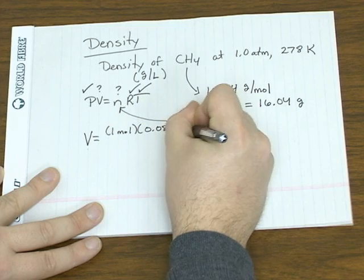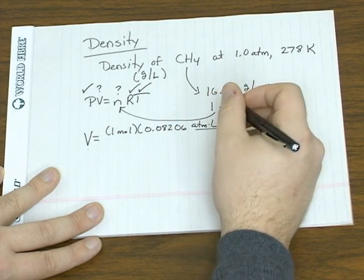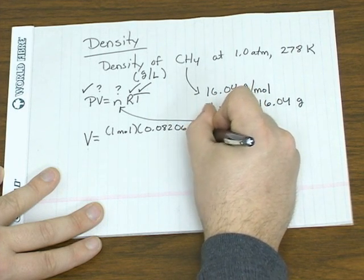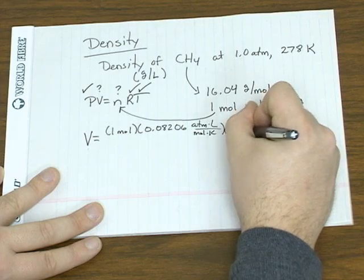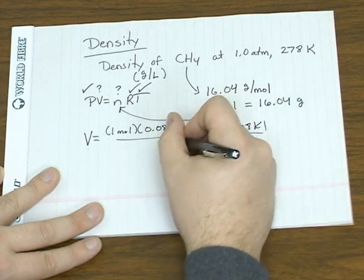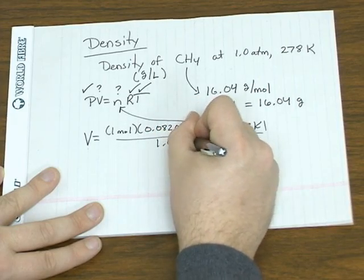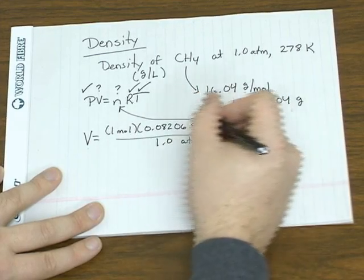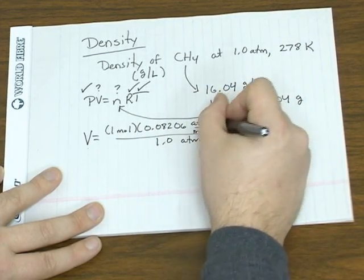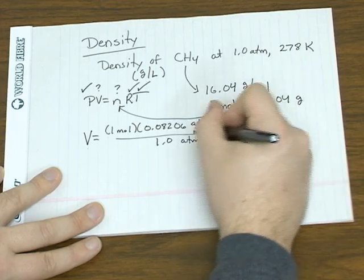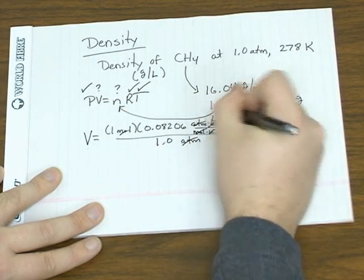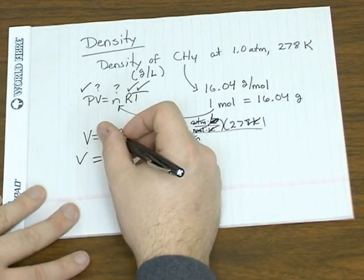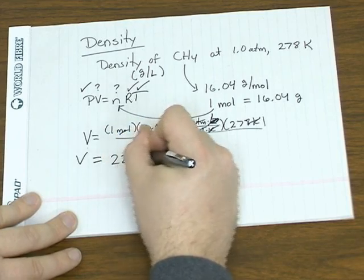So go ahead and plug everything in once again. Alright, so solving for V, that's what we have. So everything cancels out except the liter unit. So the units look okay. That gives us a volume of 22.8 liters.